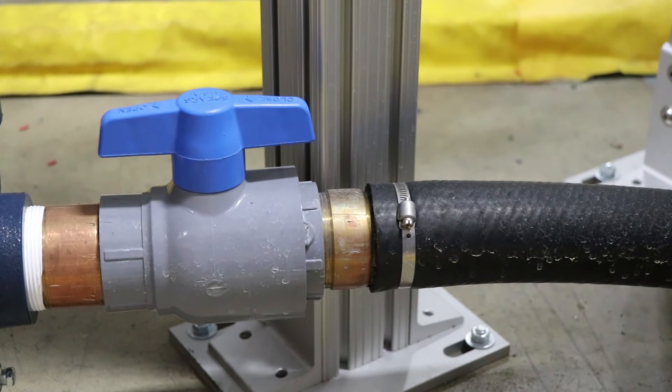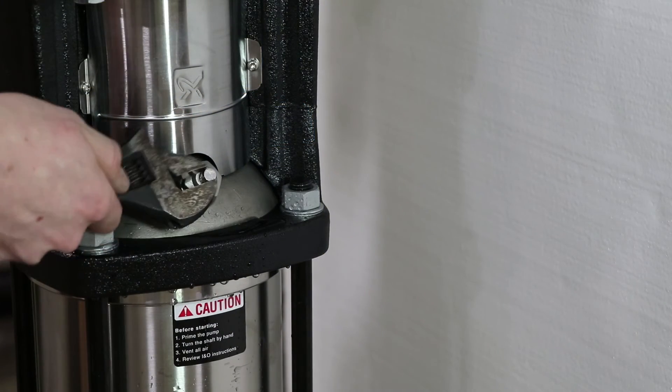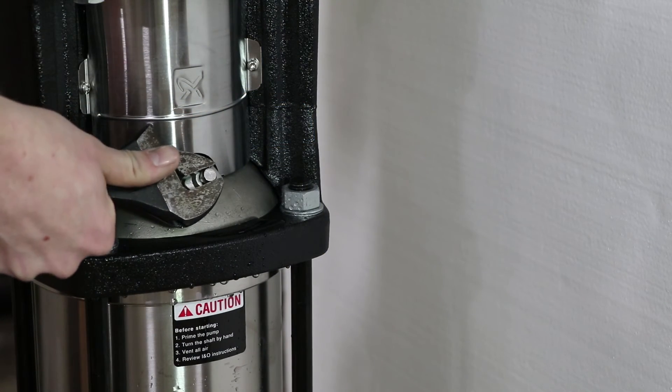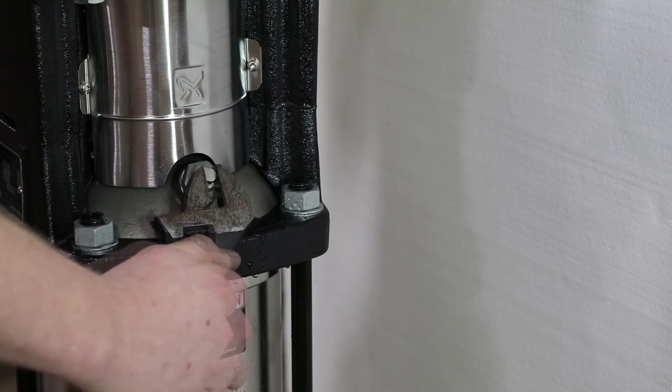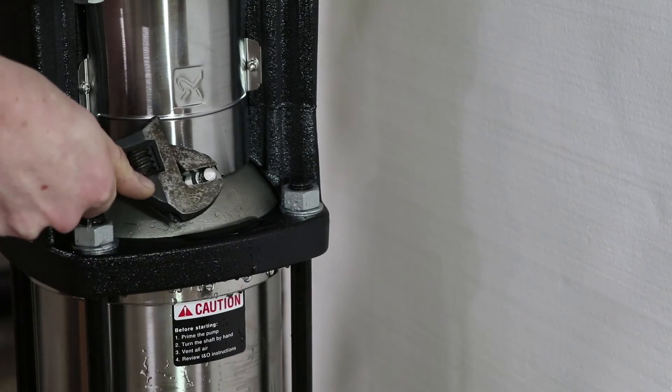After this process remember to re-prime your pump. To re-prime your pump use an adjustable wrench to open the vent at the top of the pump stack. You'll hear air hissing out for a little while until water starts to flow out. Once water starts to flow out you can then tighten to close.